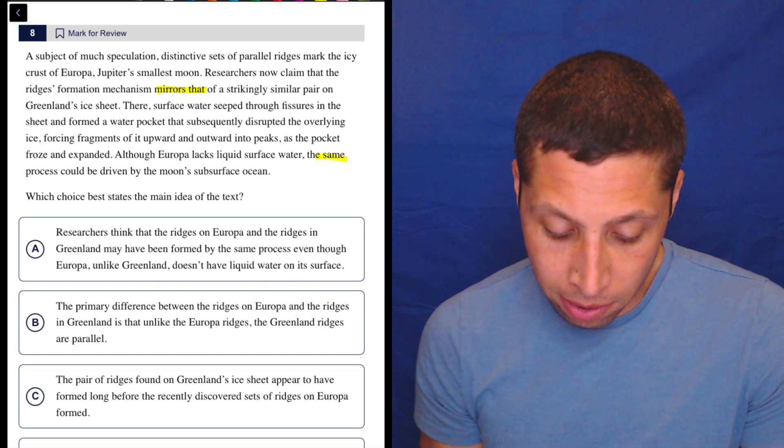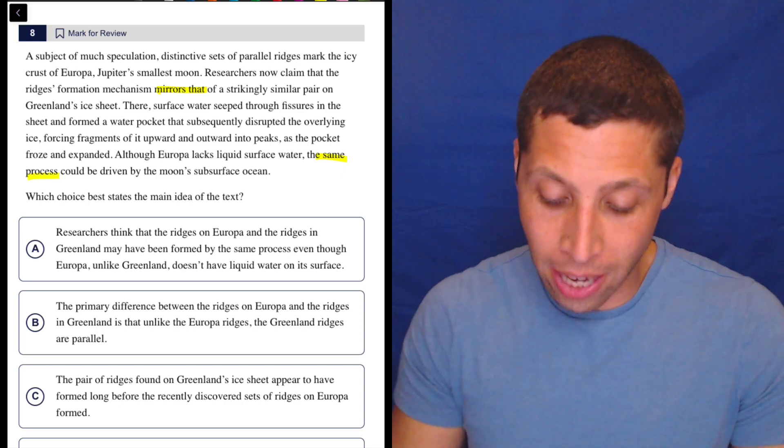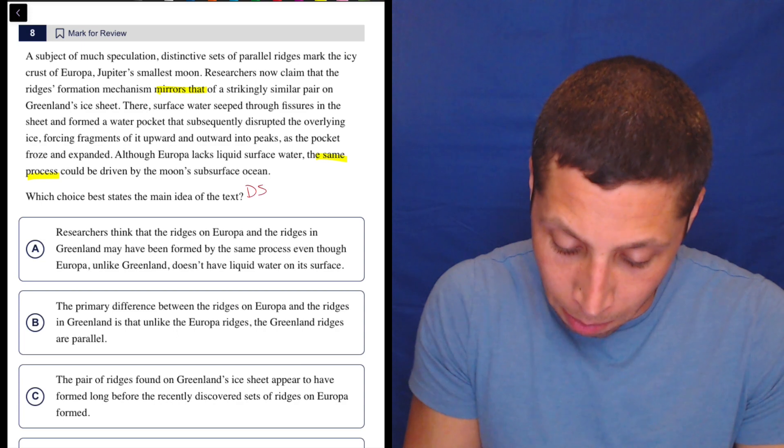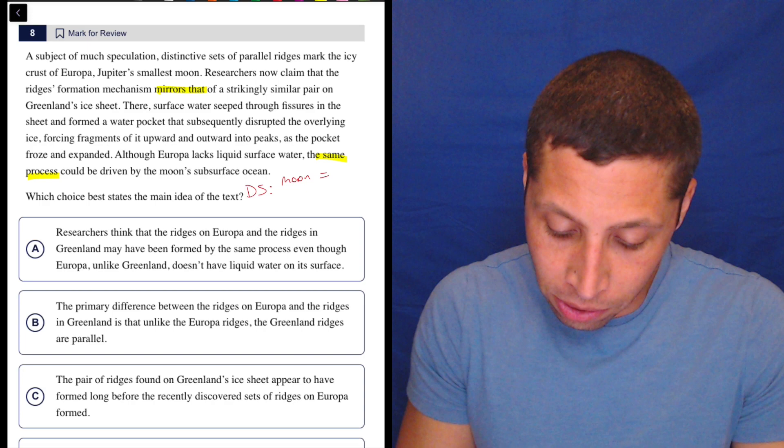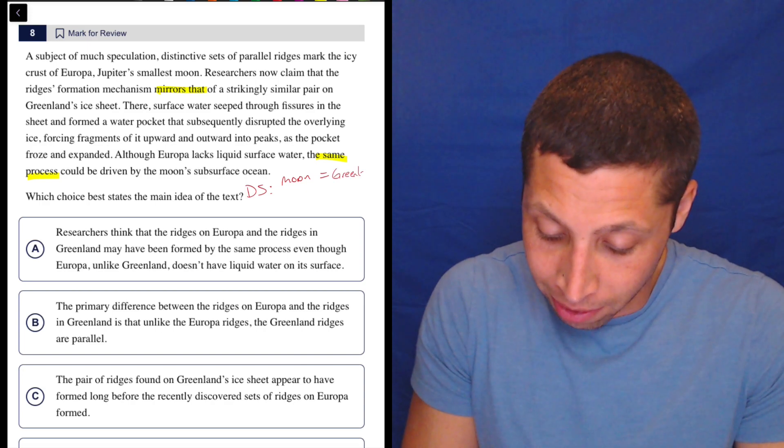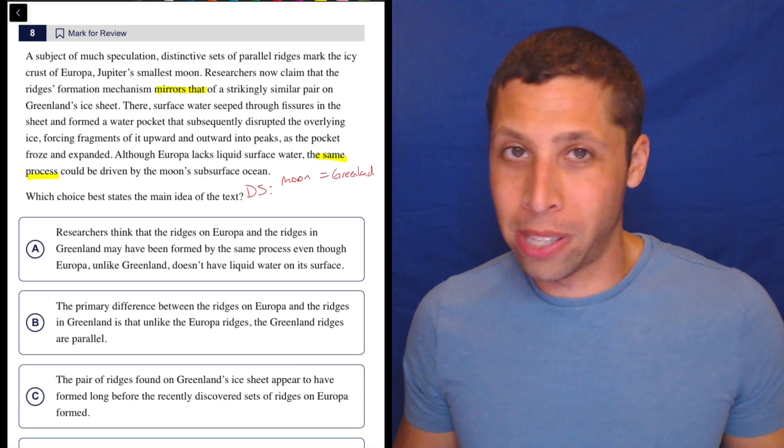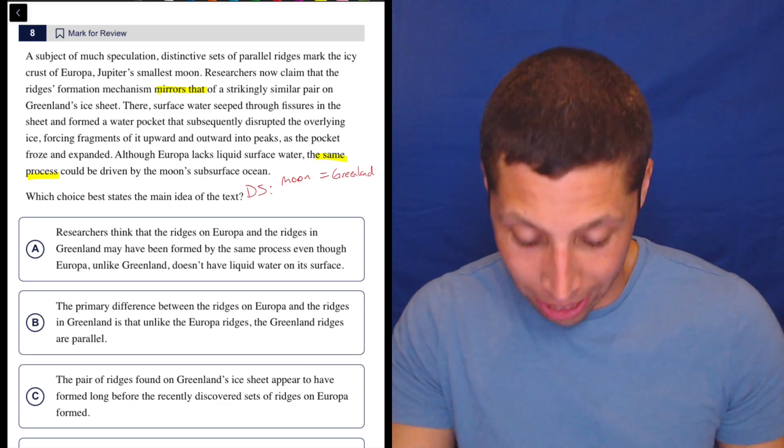So notice the things that I'm highlighting are saying that there's a similarity. So what they're saying, dumb summary here, dumb summary is they are saying that the moon equals the, I guess, Greenland is the other thing, right? That there's some sort of similarity. Now, let's just see what this suggests. Let's see if any choices kind of match with that.